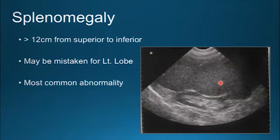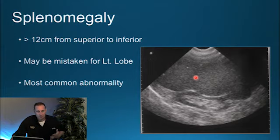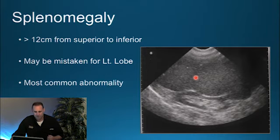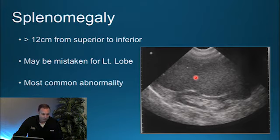Splenomegaly is generally the most common abnormality you'll come across — greater than 12 cm from superior to inferior surface. The spleen can sometimes be mistaken for the left lobe of the liver because it can grow so large it approaches and pushes the left lobe of the liver out of the way. Common reasons for splenomegaly include recent trauma, congestive causes such as portal hypertension, and infiltrative issues such as Hodgkin's or non-Hodgkin's lymphoma.